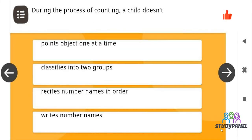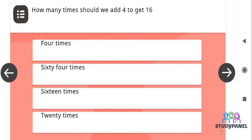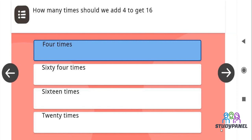During the process of counting a child doesn't write number names. How many times should we add 4 to get 16? Four times.